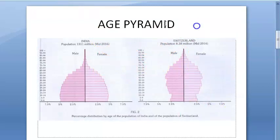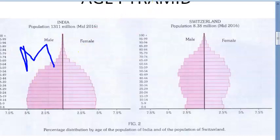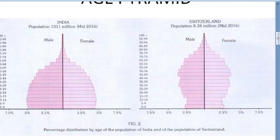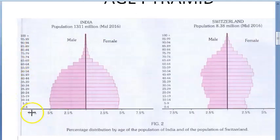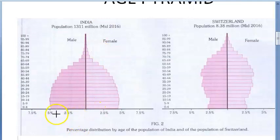This age pyramid is comparing India and Switzerland. On one side we have males and on the other side females. The age groups go from zero to four years for babies all the way up to a hundred plus years. Let's understand India first.